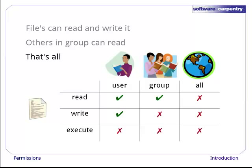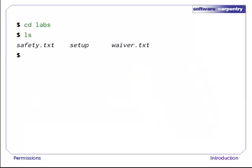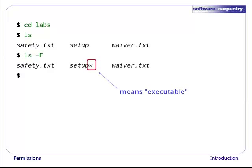Let's have a look at this model in action. If we cd into the labs directory, ls shows us that it contains three things: safety.txt, setup, and waiver.txt. If we run ls -F, it puts a star at the end of setup's name. This is its way of telling us that setup is executable, i.e. that it's a program of some kind that we can run.